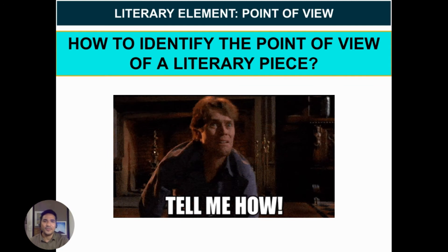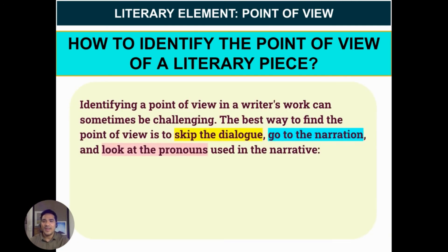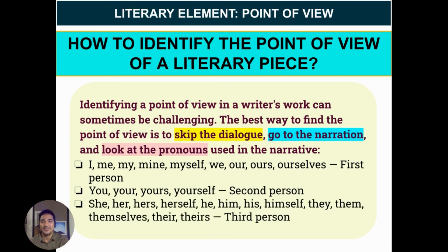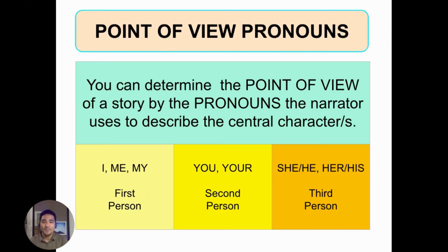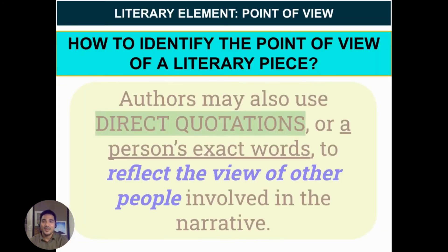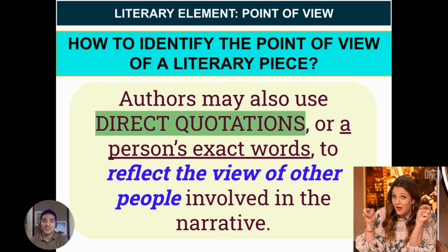How to identify the point of view of a literary piece? Identifying point of view in a writer's work can sometimes be challenging. The best way to find the point of view is to skip the dialogue, go to the narration, and look at the pronouns used in the narrative. If you see I, me, my — that's definitely first person. If you see you, your — that's second person. And if you see she, he, her, his — that's definitely third person point of view. Authors may also use direct quotations or a person's exact words to reflect the view of other people involved in the narrative.